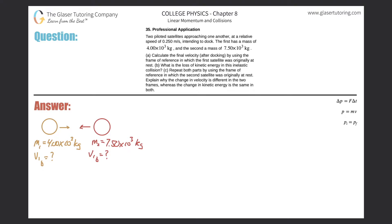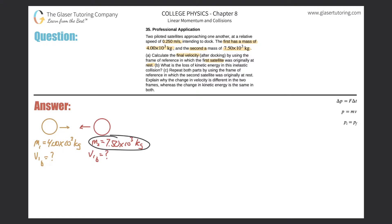Problem number 35, professional application: two piloted satellites approaching one another at a relative speed of 0.25 meters per second, intending to dock. The first has a mass of 4 times 10 to the 3 kilograms and the second a mass of 7.5 times 10 to the 3 kilograms.